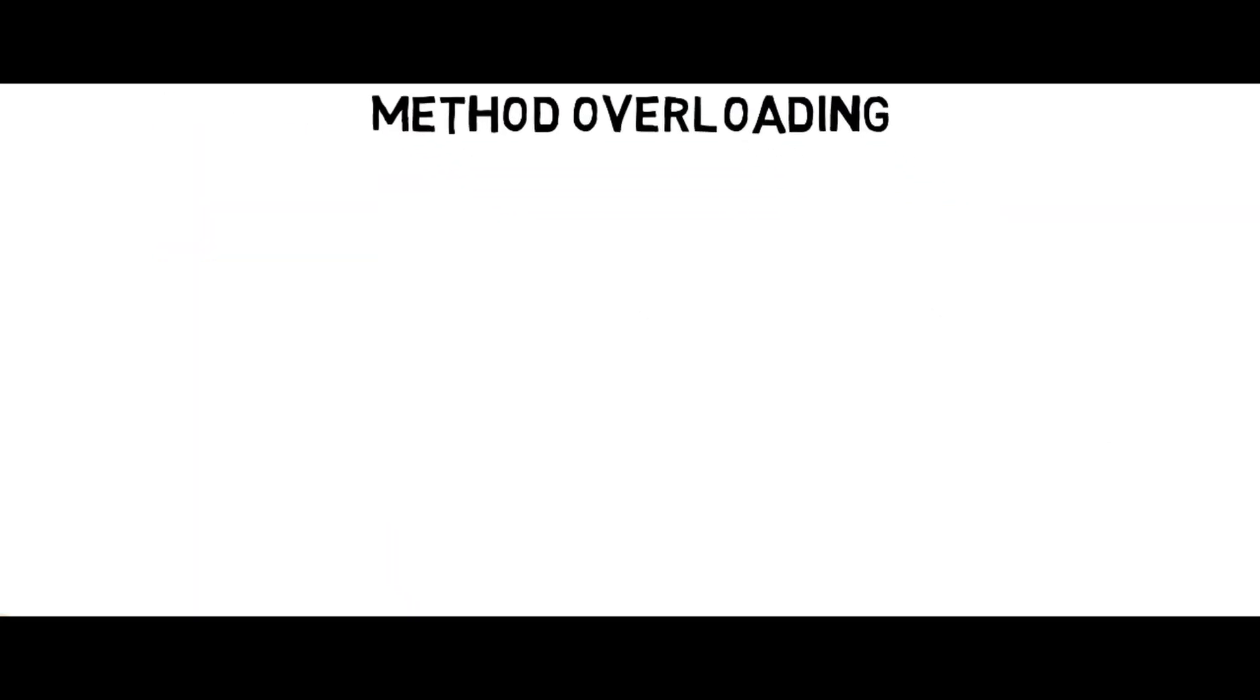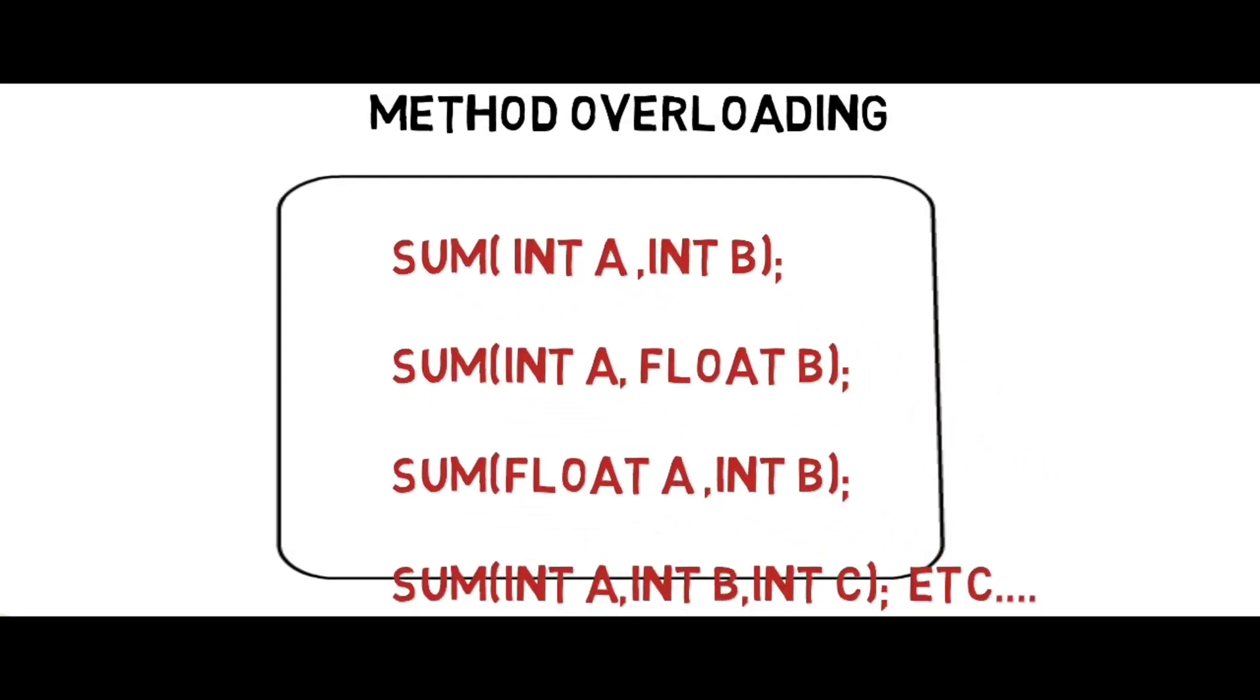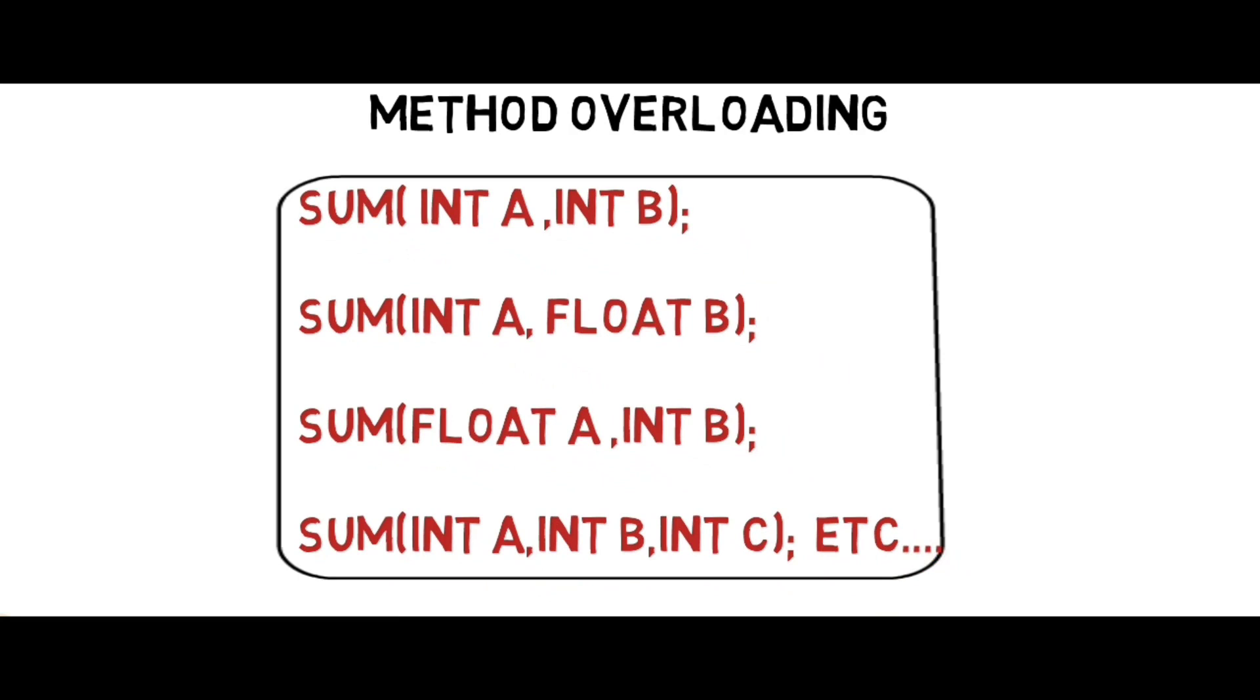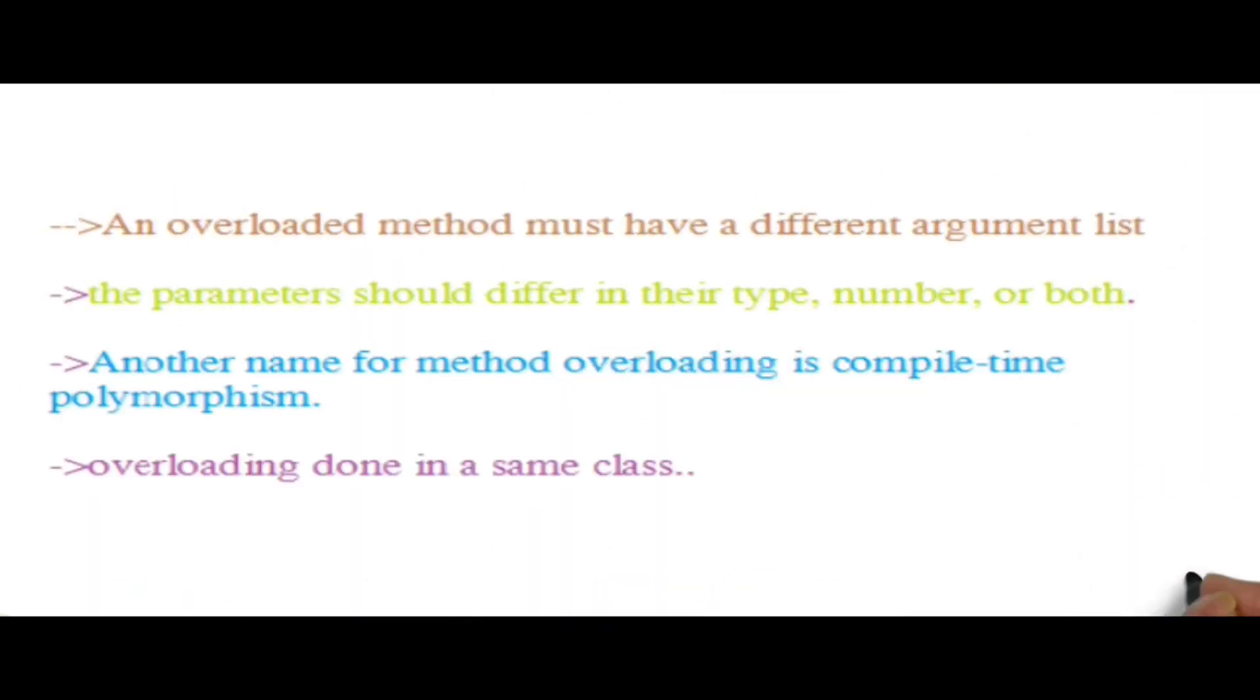Now, method overloading. When methods have the same name but different parameters and return types, it is known as method overloading. It is useful when we need the same functionality for different types of parameters. Method overloading is also known as compile-time polymorphism or static polymorphism.